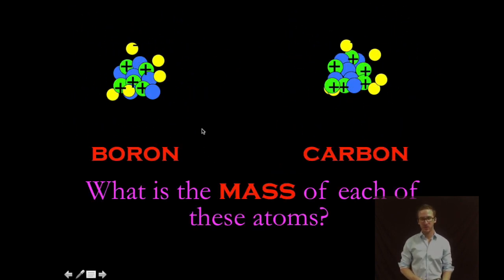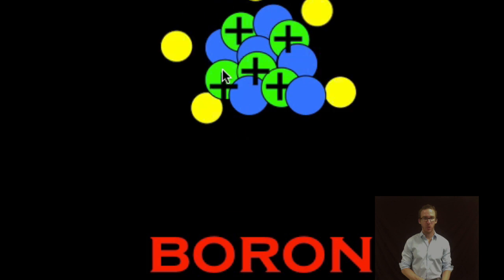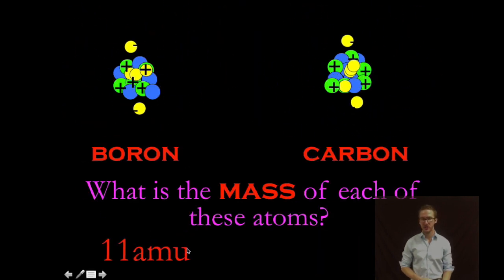So as you take a look at these two atoms again, we're gonna start with the atom on the left. Our atom of boron has a mass of 11 because there's one, two, three, four, five positive protons but one, two, three, four, five, six neutral neutrons. Boom, 11 atomic mass units.